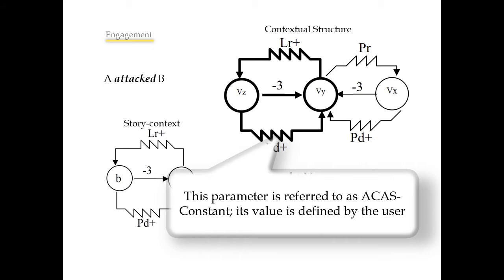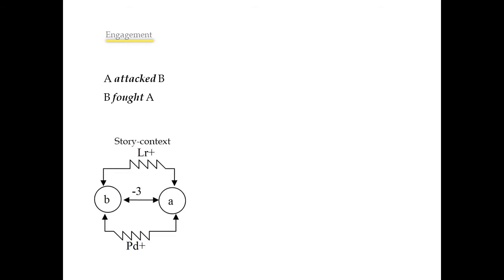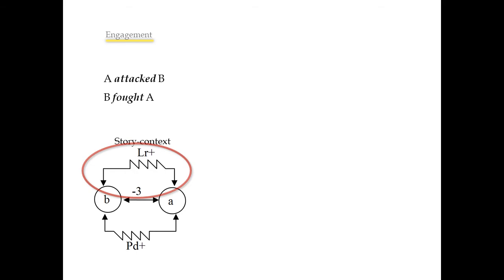Its value is defined by the user. The characters in the story context are mapped with those in the contextual structure in order to properly instantiate the associated action. In this way, 'B thought A' becomes the next action in detail. The story context is updated. As we can see, now characters A and B hate each other. In the same way, the lives of both characters A and B are at risk, and because both are located in the same position and hate each other, the potential danger tension is activated for both characters.